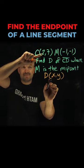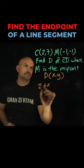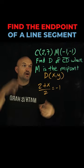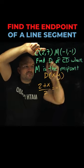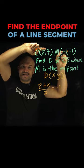We know 2 plus x divided by 2 is equal to negative 1. We also know that 7 plus y divided by 2 is equal to also negative 1.